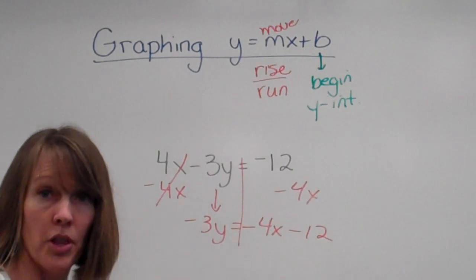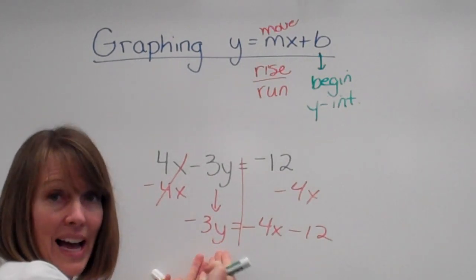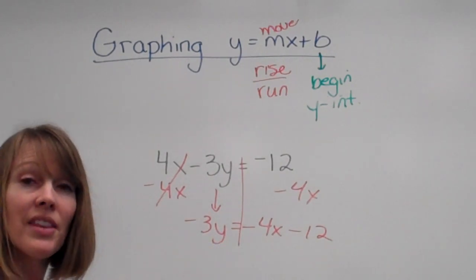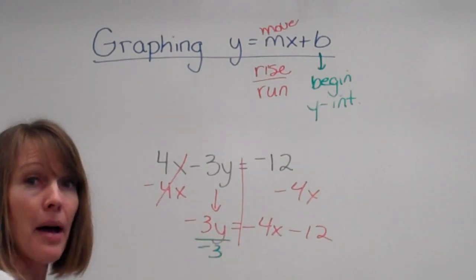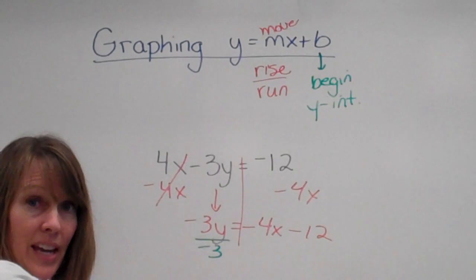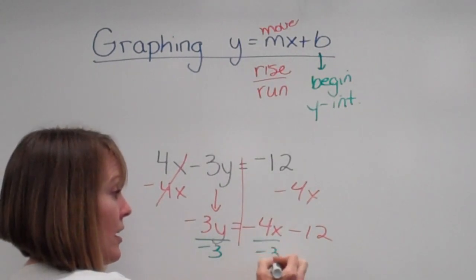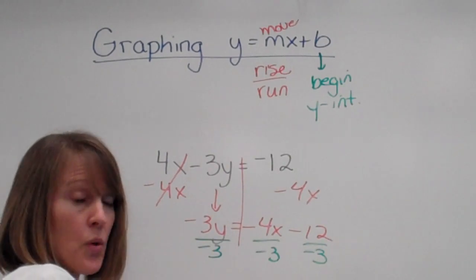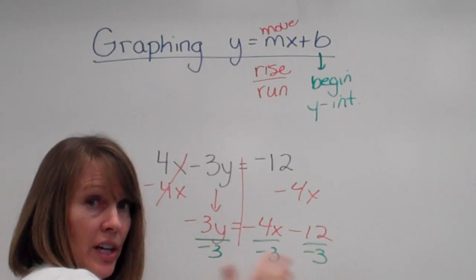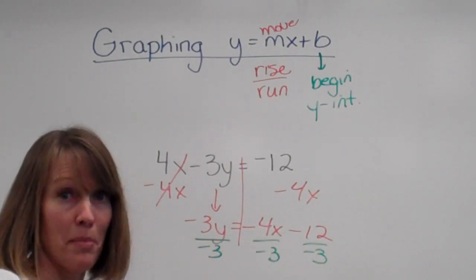Alright, now remember, think of it in terms like we did with our x, but now we're trying to get the y alone. So we're going to get rid of the attached number by dividing by negative 3. That means we have to divide everything on the other side as well by negative 3. Remember, it's both sides of the equation, but you have more than one thing over here. So basically, everything now is going to be divided by 3.